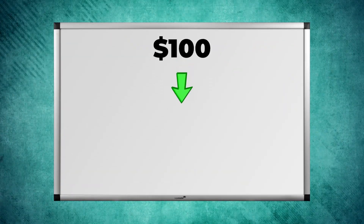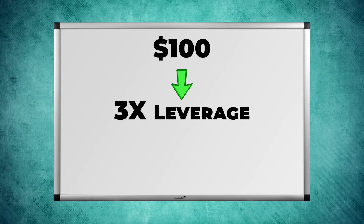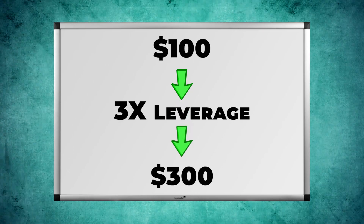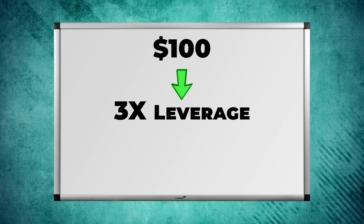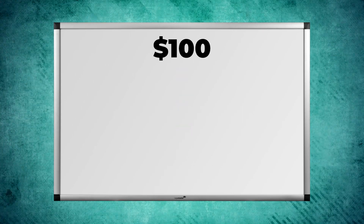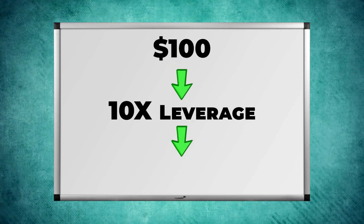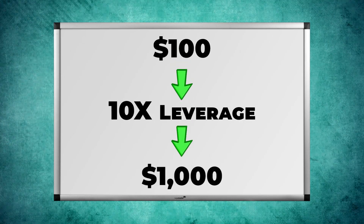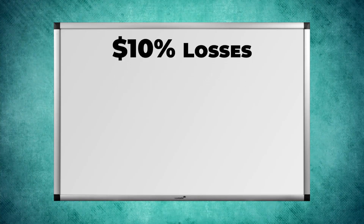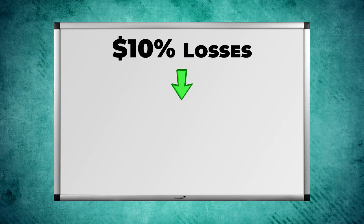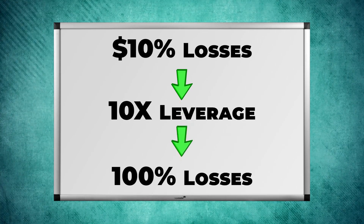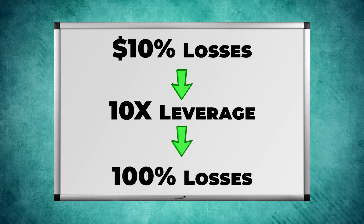For example, if you would normally earn $100 and now you use 3x leverage, you earn $300. Or if you would normally earn $100 and you use 10x leverage, you earn $1,000. But the same works vice versa — if you would normally lose 10% and you are using 10x leverage, you lose the whole position, 100%.